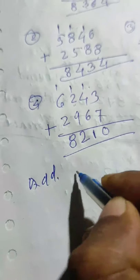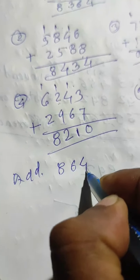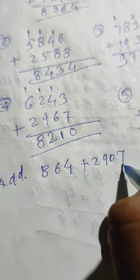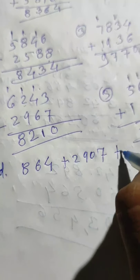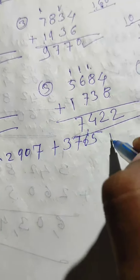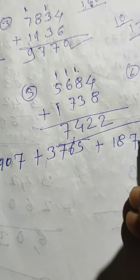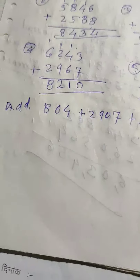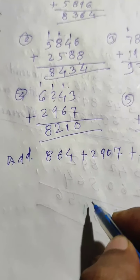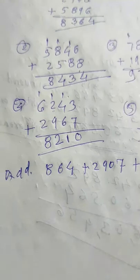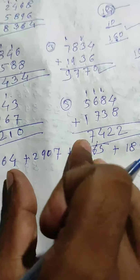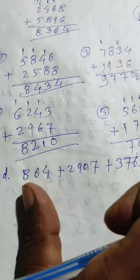Added: eight hundred sixty four, plus two thousand nine hundred seven, plus three thousand seven hundred sixty five, plus one thousand eight hundred seventy four. All numbers are written. Now arrange them - arranging won't affect the answer. There are four digit places: ones, tens, hundreds, and thousands.